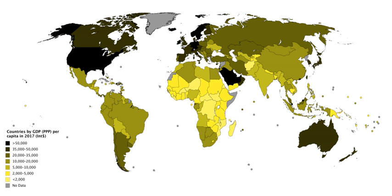Two adjustments must be made to get GDP: indirect taxes minus subsidies are added to get from factor cost to market prices, and depreciation or capital consumption allowance is added to get from net domestic product to gross domestic product. Total income can be subdivided according to various schemes, leading to various formulae for GDP measured by the income approach.